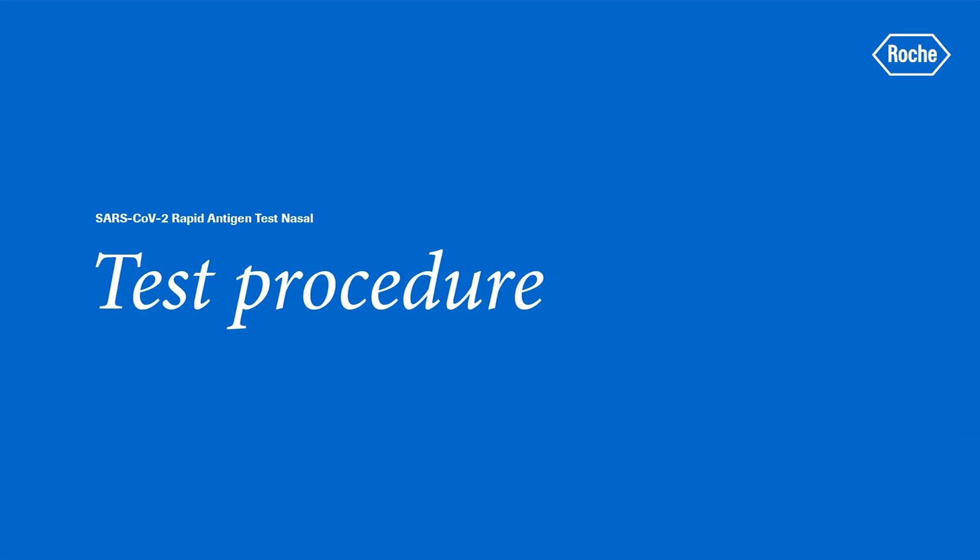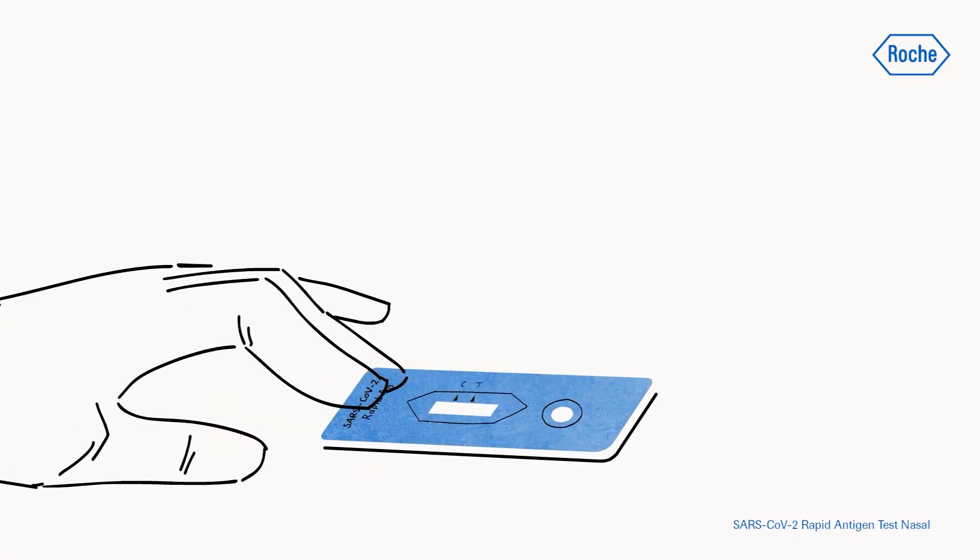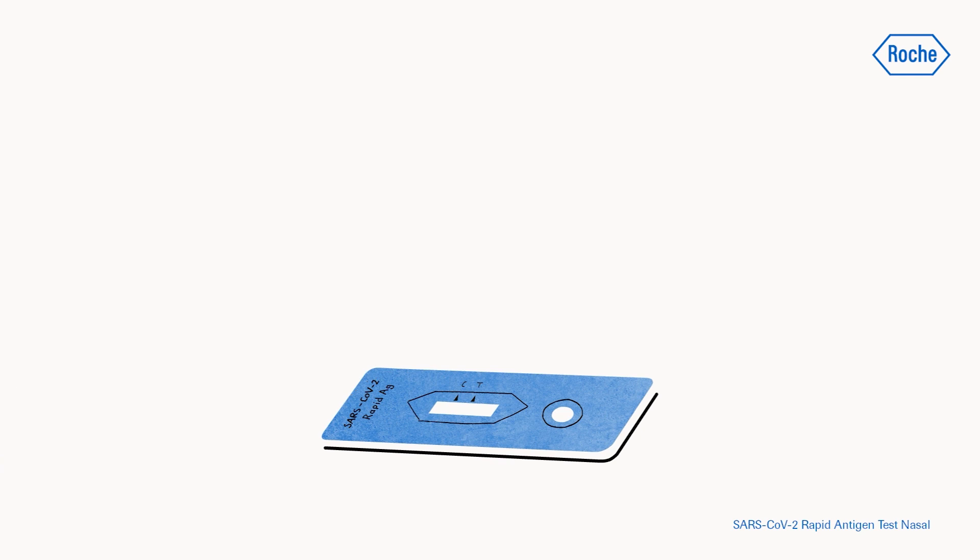Here's how to proceed with the sample. Place the test device on a flat surface. Turn the tube and apply four drops of extracted sample at a 90 degree angle to the specimen well of the test device.